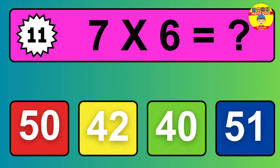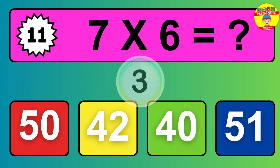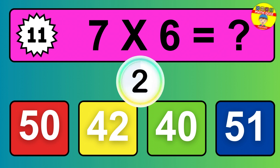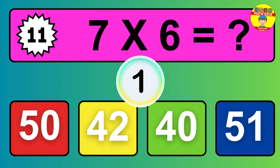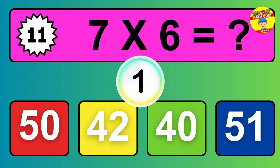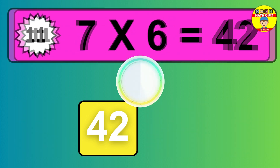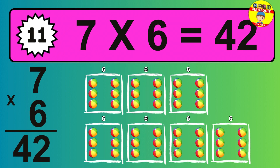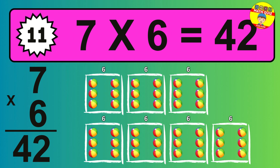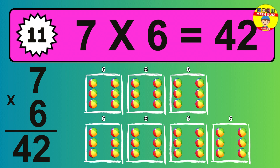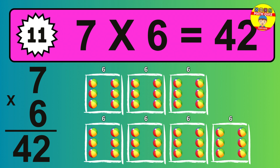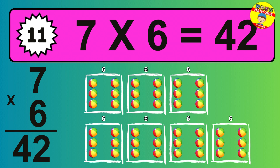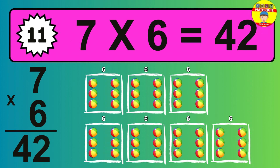Question 11. 7 times 6 equals what? The answer is 7 times 6 is 42. To calculate, we have 7 groups with 6 balls each one. So how many balls do we have? 42 balls.